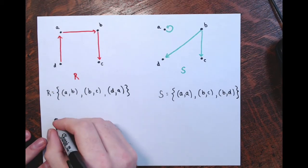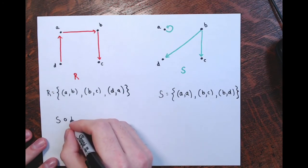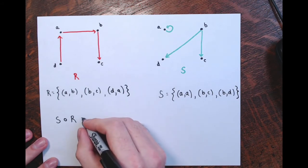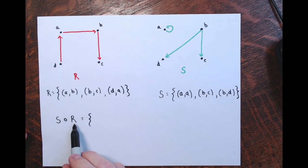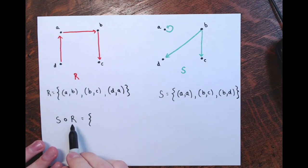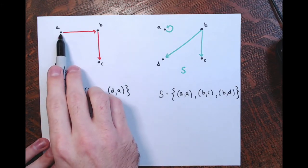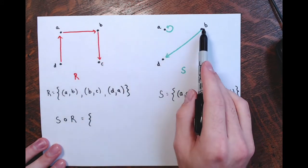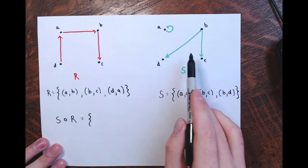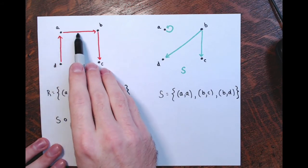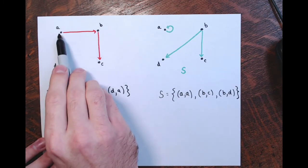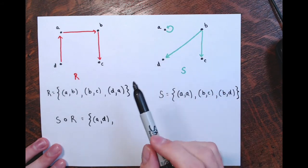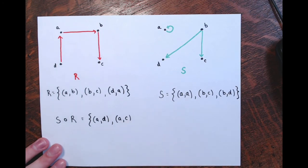First I'll make S∘R — apply R first, then S. Looking at element A: A maps to B in R, and in S, B maps to two different things. So A maps to B which maps to D — giving ordered pair (A,D). Also A maps to B which maps to C — giving ordered pair (A,C) in S∘R.